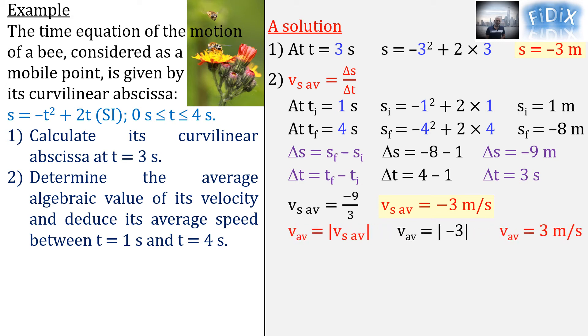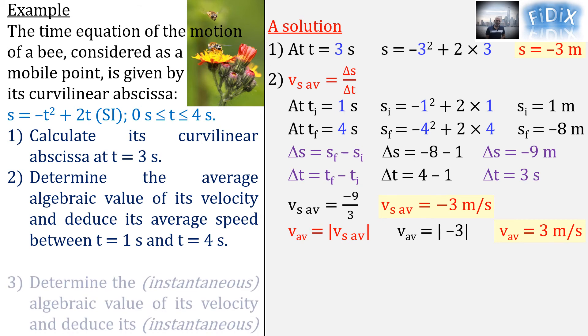The speed is the magnitude of the velocity, thus the absolute value of v_s average, and the average speed is equal to 3 meters per second in this case.